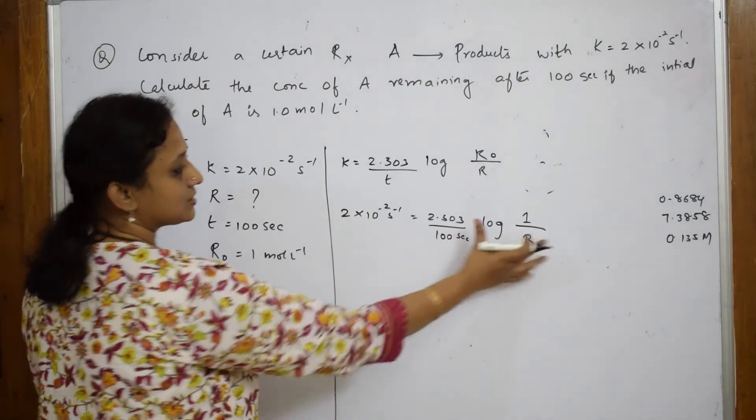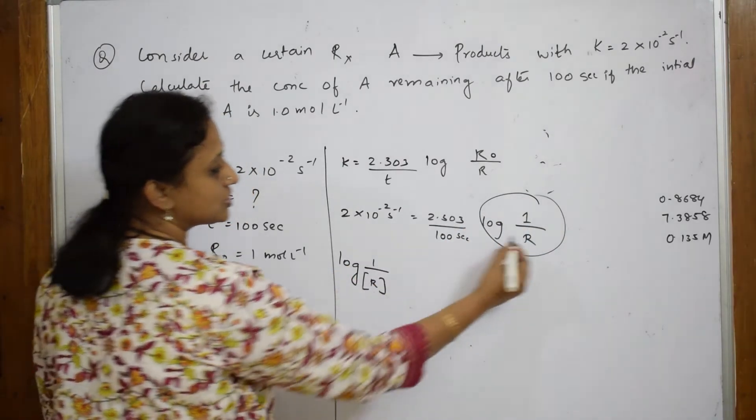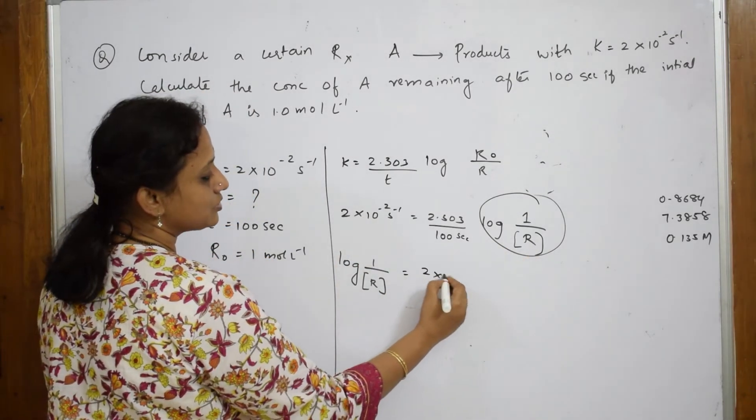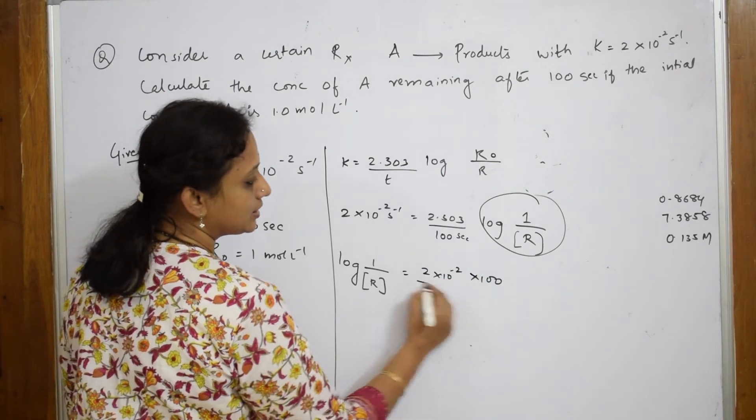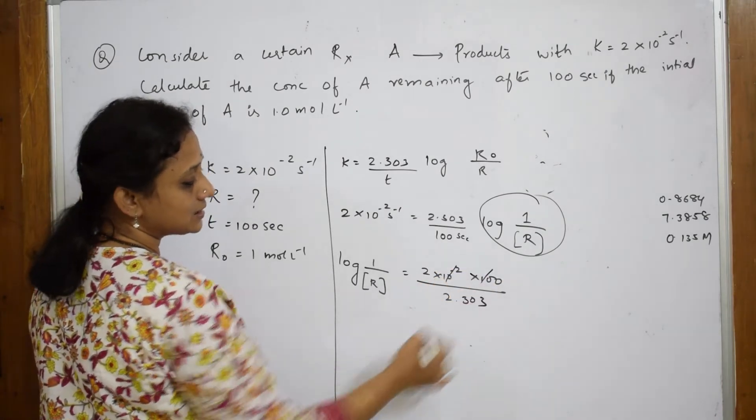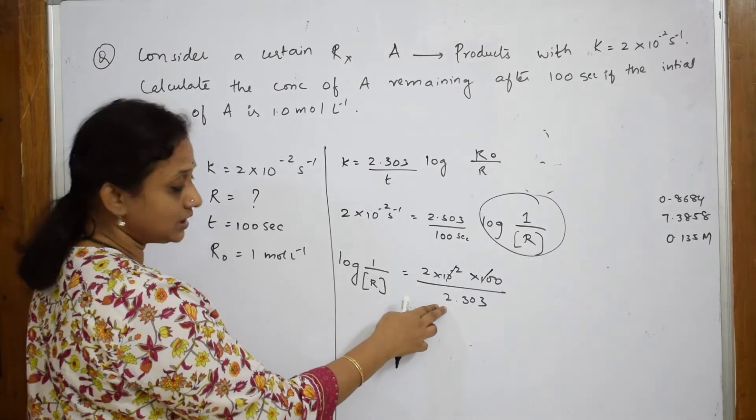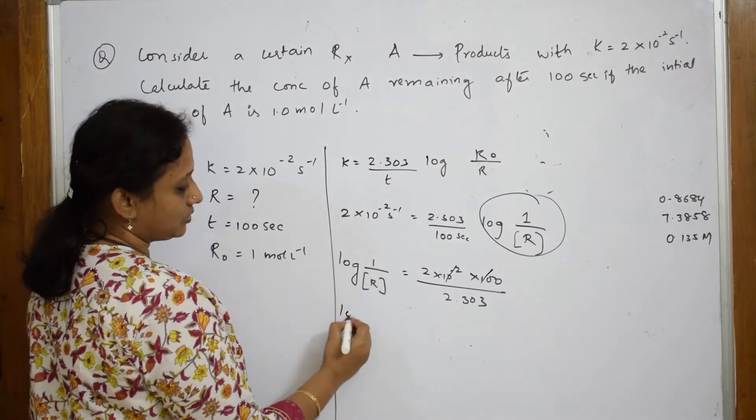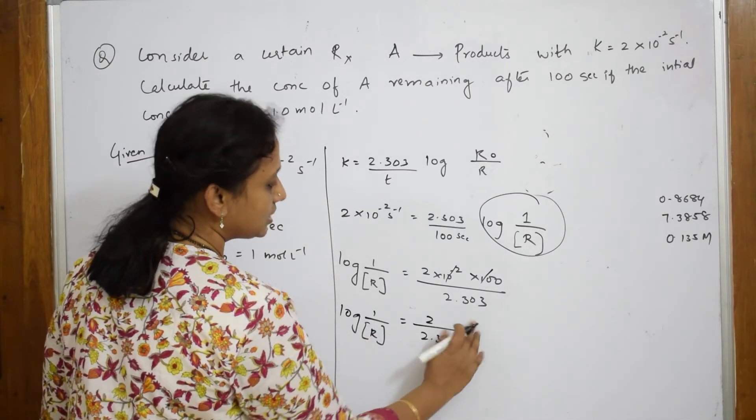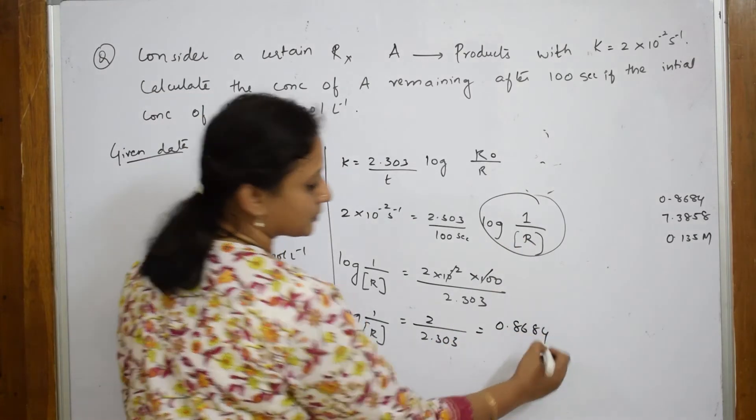Get this whole quantity on this side, log 1 by R. You multiply this and this. This becomes 2 into 10 minus 2 into 100 divided by 2.303. This and this gets cancelled. So we get 2 divided by 2.303. Log 1 by R concentration, 2 divided by 2.303. So when you solve this, you get an answer of 0.8684.